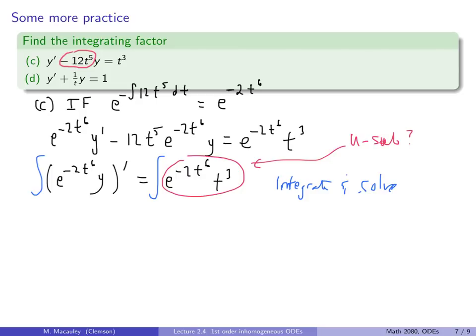For part (d): I circle the coefficient of y including the sign. The integrating factor is e to the integral of (1/t) dt. Remember, the integral of 1/t is natural log of t, and e^(ln t) is just t. So our integrating factor here is simply t — you don't always need an exponential.